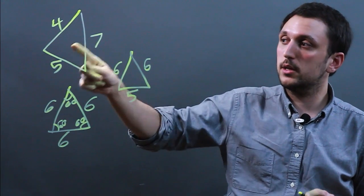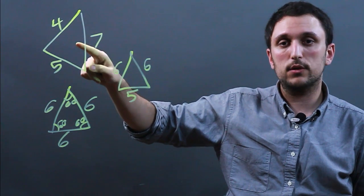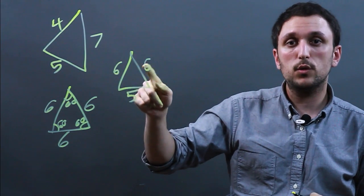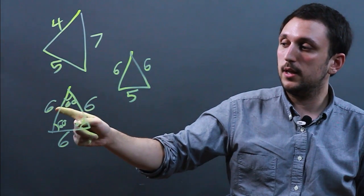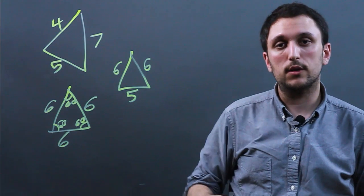So just to repeat, a scalene triangle: no sides and no angles equal. An isosceles: two sides and two angles equal. And an equilateral is three sides and three angles are equal.